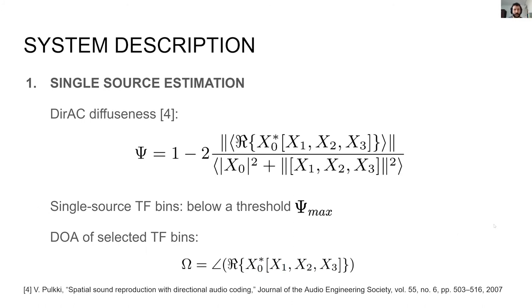In our work, diffuseness is computed using the direct definition from the input ambisonic signal. The single source test is reduced to binary masking with a fixed threshold. Finally, instantaneous narrowband DOA estimates are computed by the angle of the intensity vector.